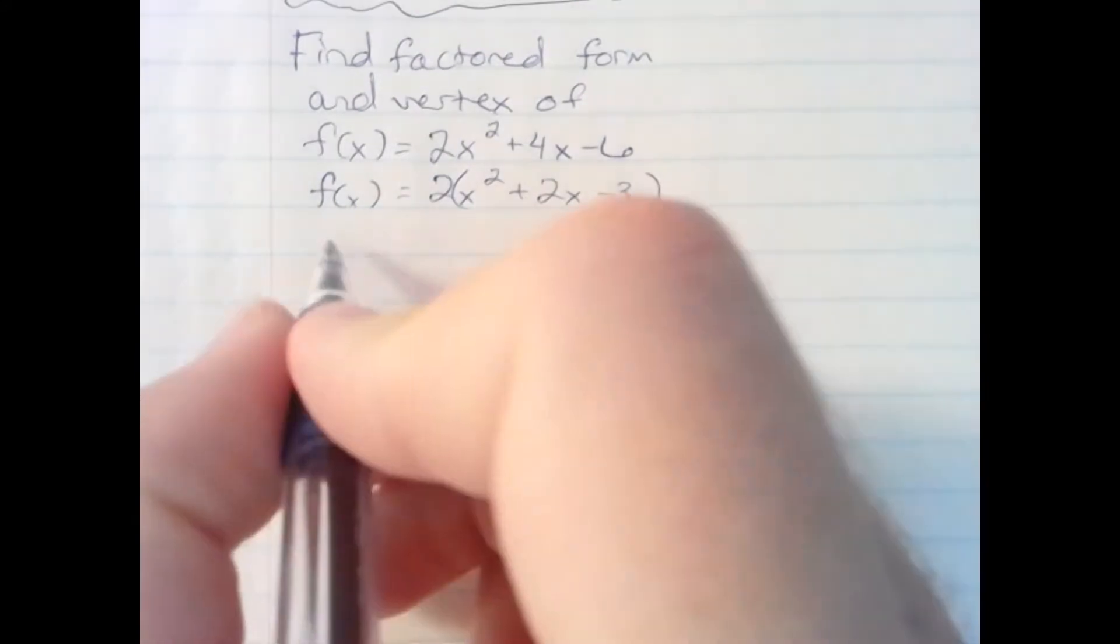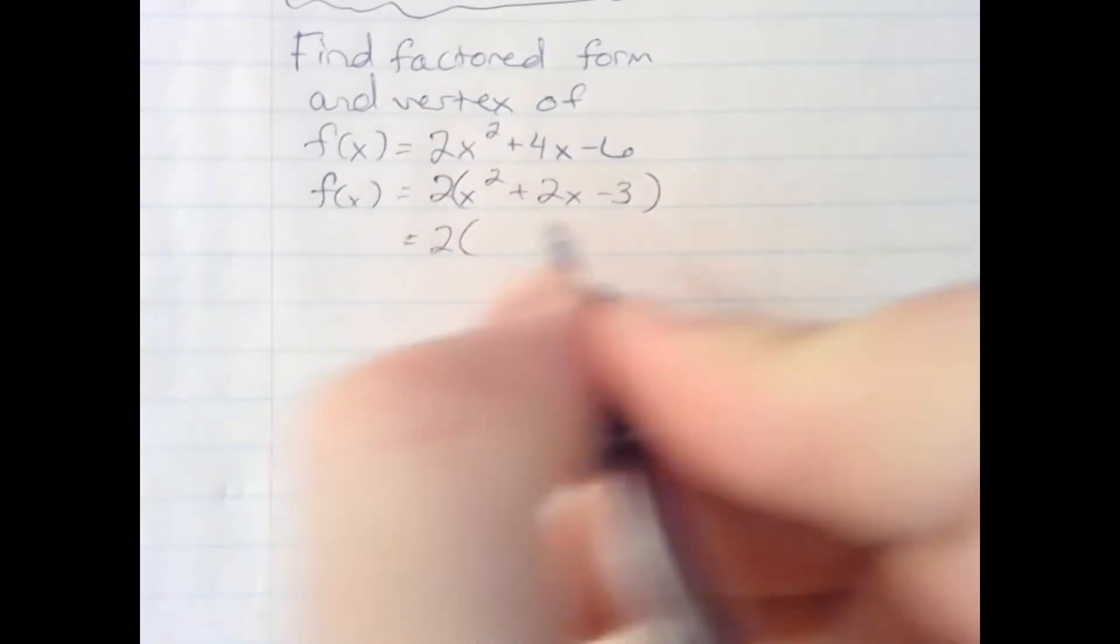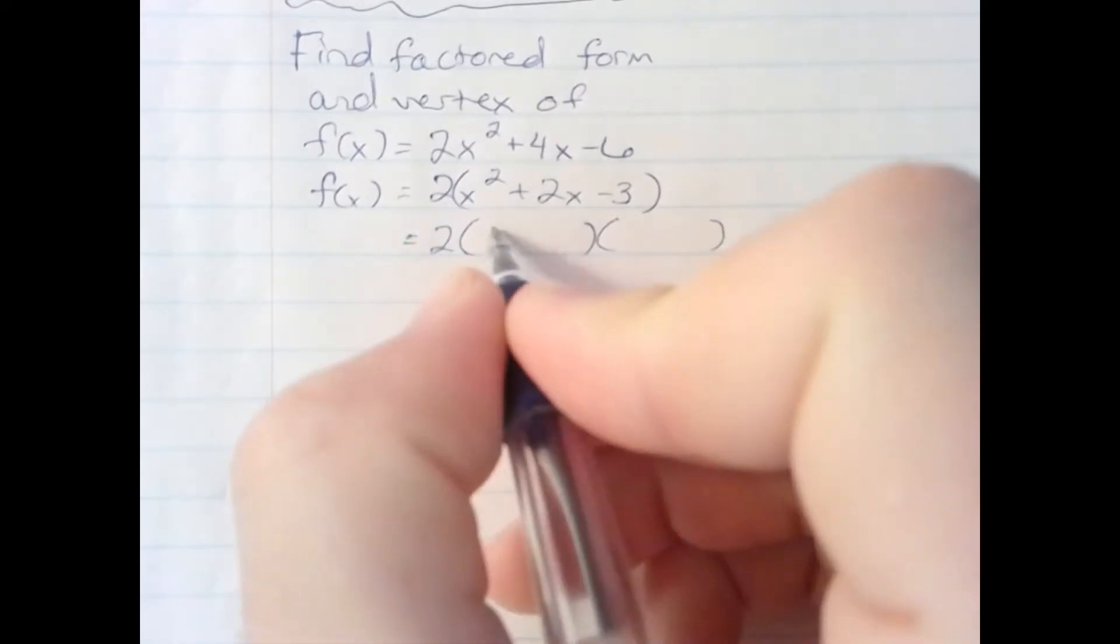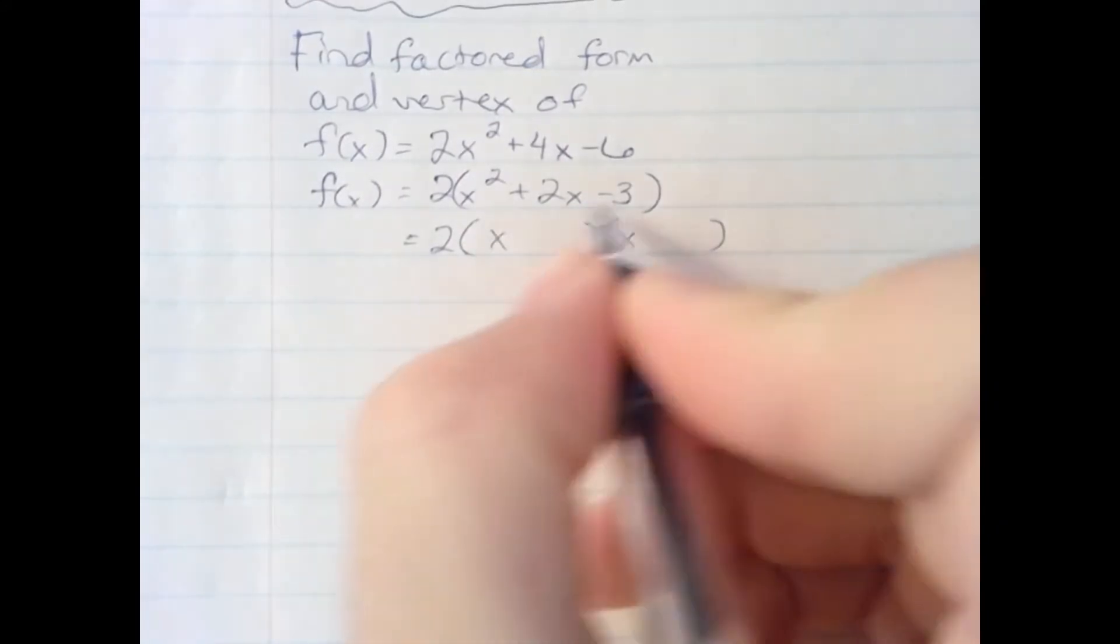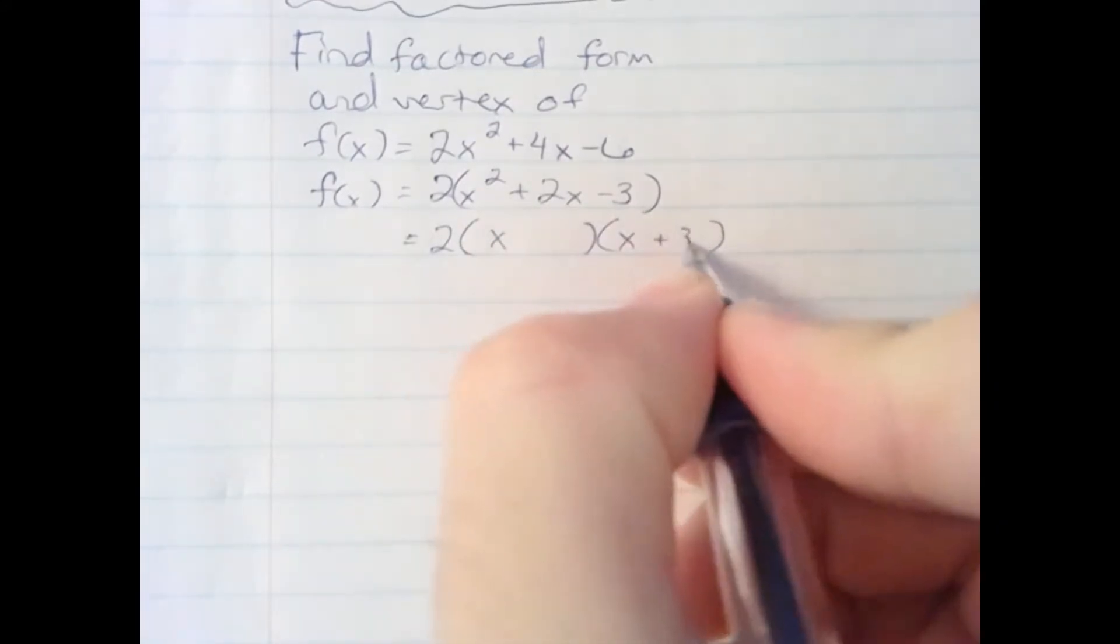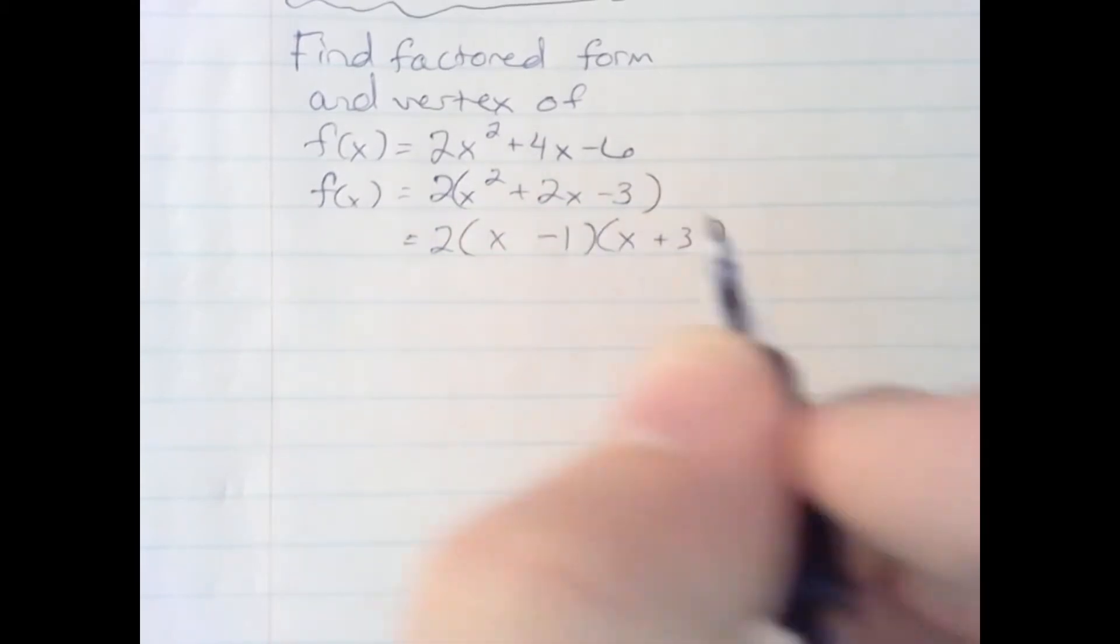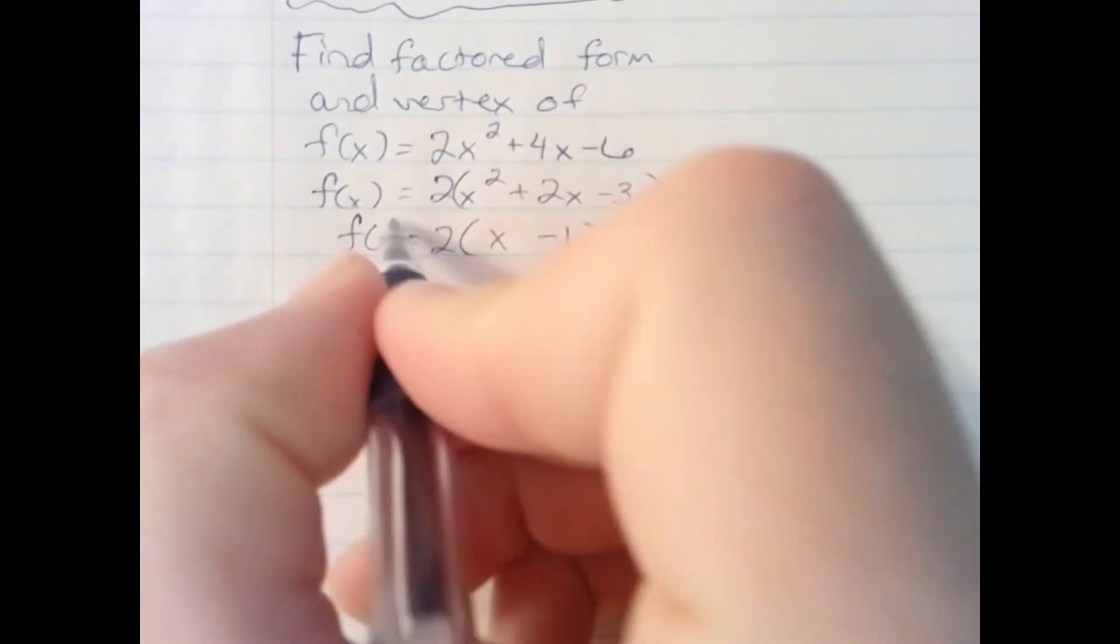Alright, then to get factored form, I'll ask myself what factors of negative 3 add up to positive 2. That would be plus 3 and minus 1. So this is my factored form.